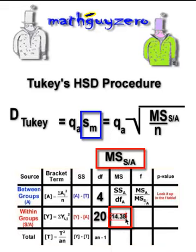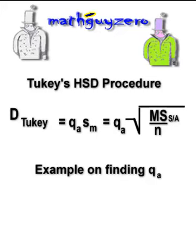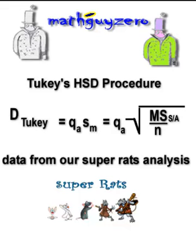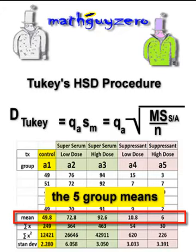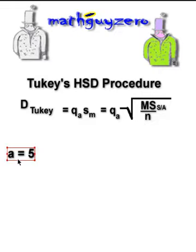Let's go ahead and do a quick example. We're going to take the data from our super rats — I suggest you watch those other movies. We'll just take the group means from there. The number of groups we have is five.